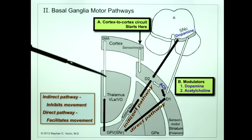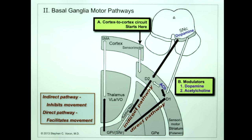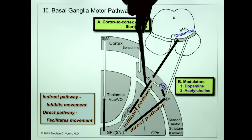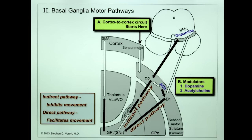Don't worry about every excitatory and inhibitory detail. Just remember: the indirect pathway is usually inhibitory to movement, and the direct pathway facilitates movement. Both act through the thalamus to the cortex. If you interrupt an inhibitory pathway, the patient ends up with too much movement — hyperkinesia. If you interrupt a facilitatory pathway, you get not enough movement — hypokinesia. So we have a variety of movement disorders involving too much or too little movement.